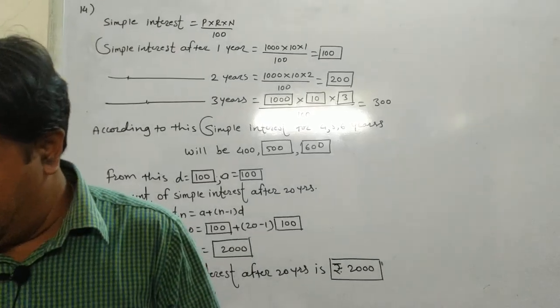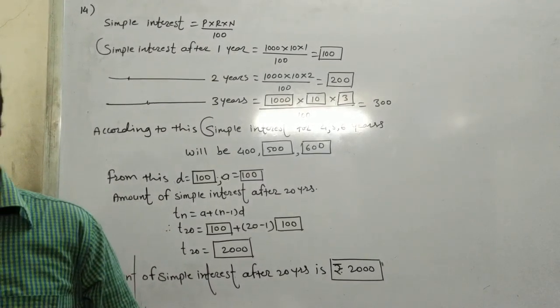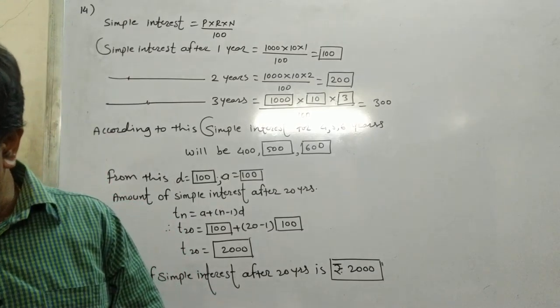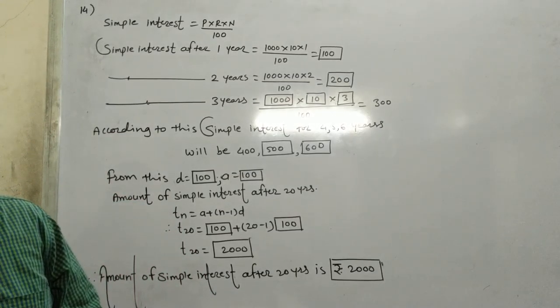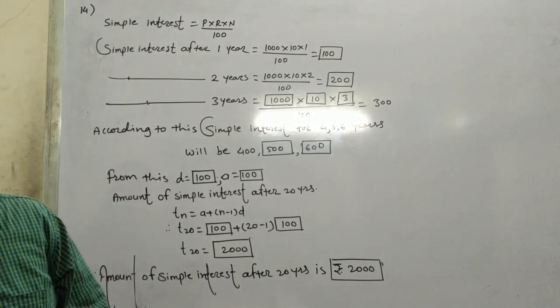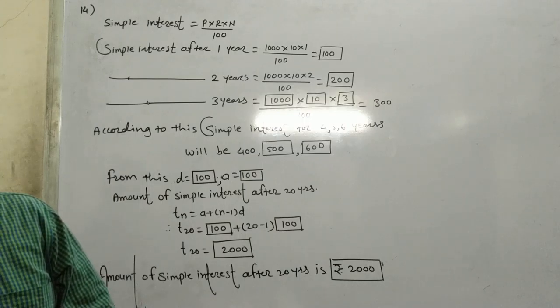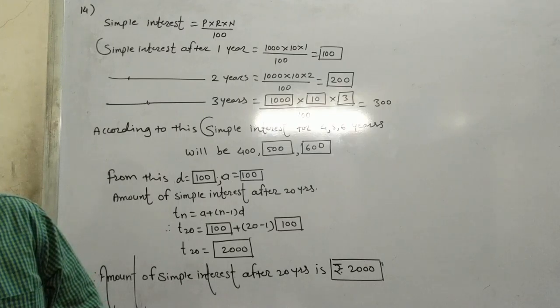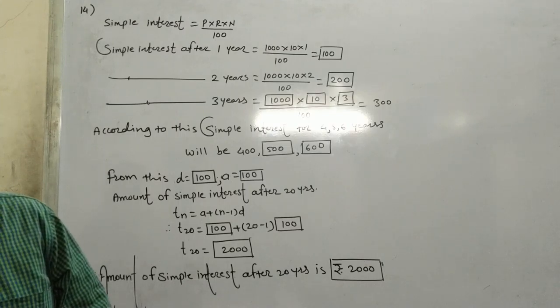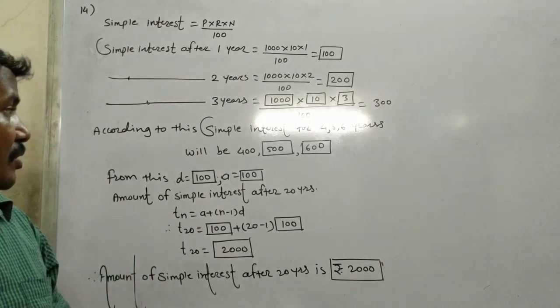Last question: Rs. 1000 is invested at 10% simple interest. At the end of every year, check if the total interest amount is in AP. If this is an AP, then find the interest amount after 20 years.